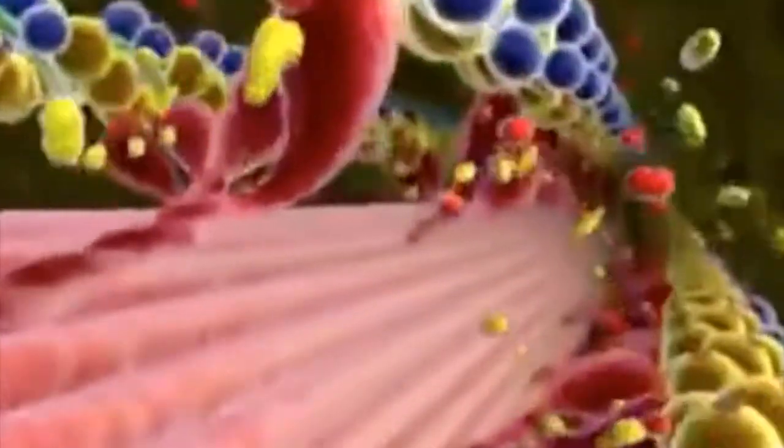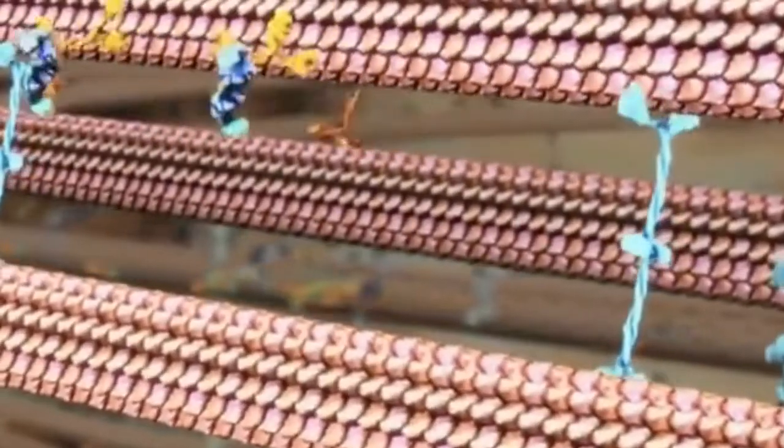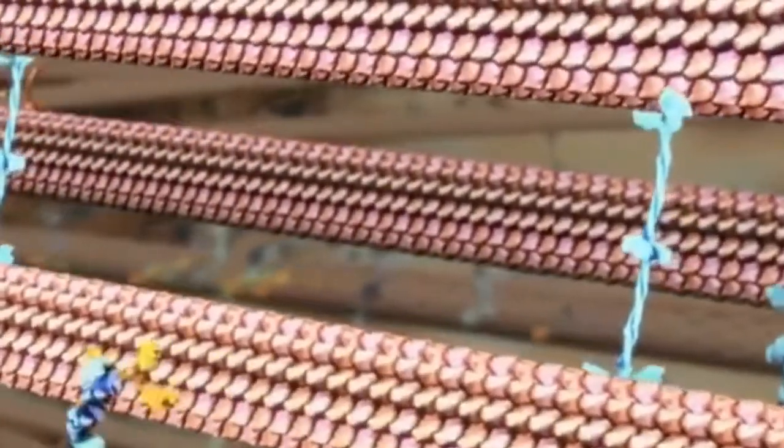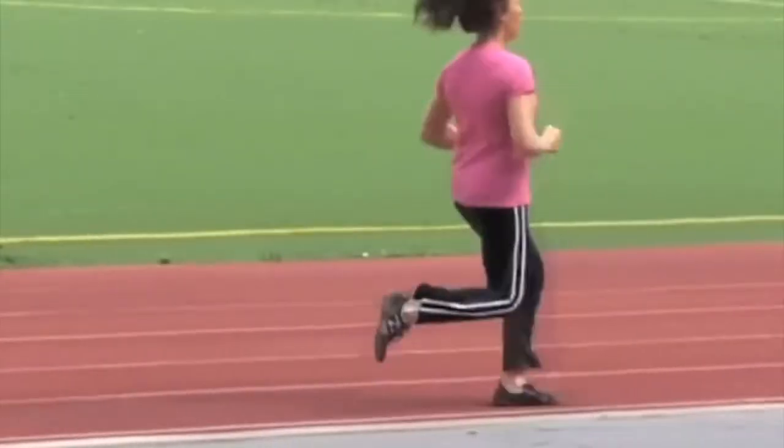When observing muscular action at the molecular level, we can analyze the interaction of myosin and actin. Myosin filaments have two globular heads that can attach to actin very similarly to how the feet would use the ground to create movement.